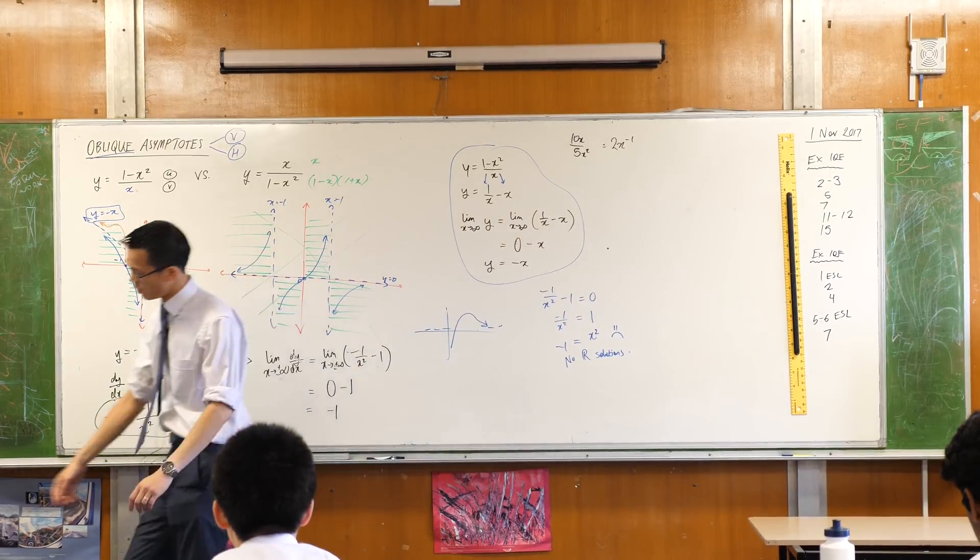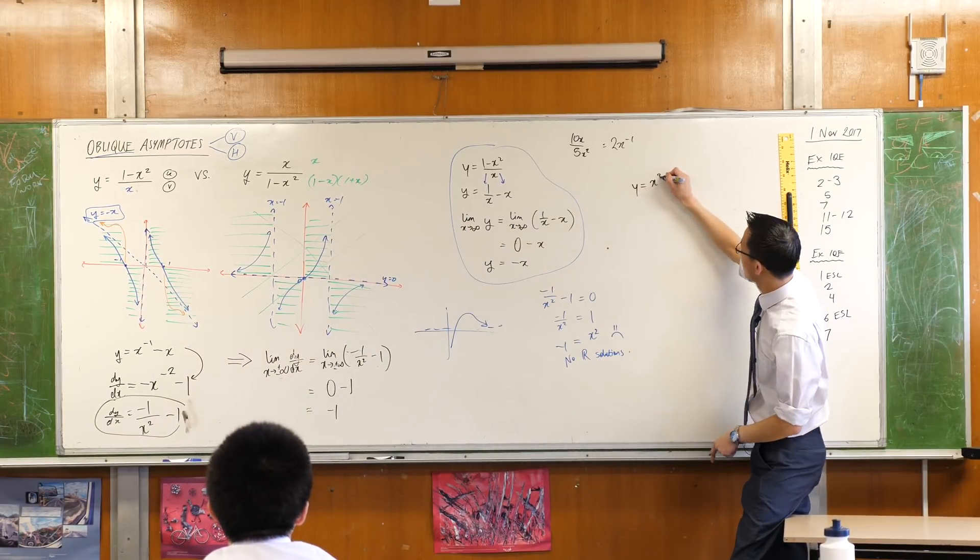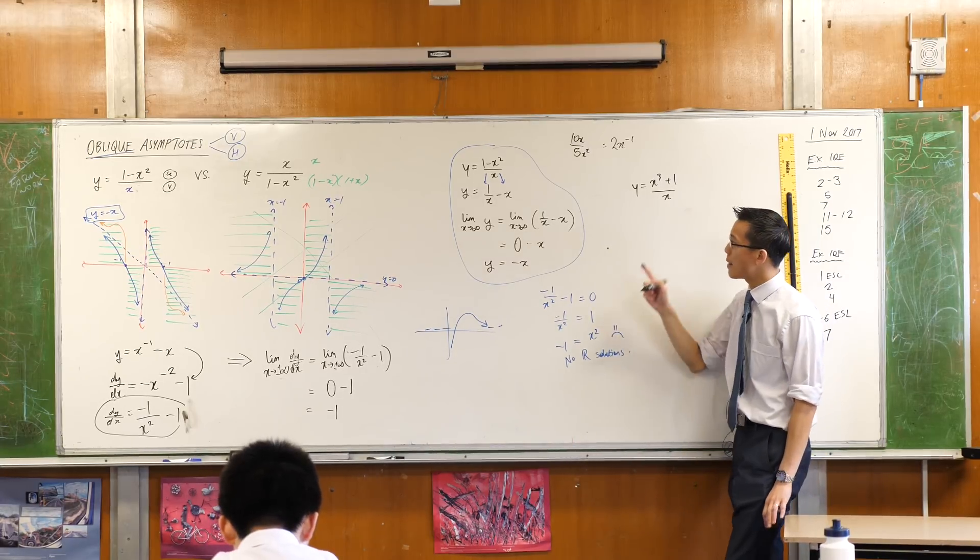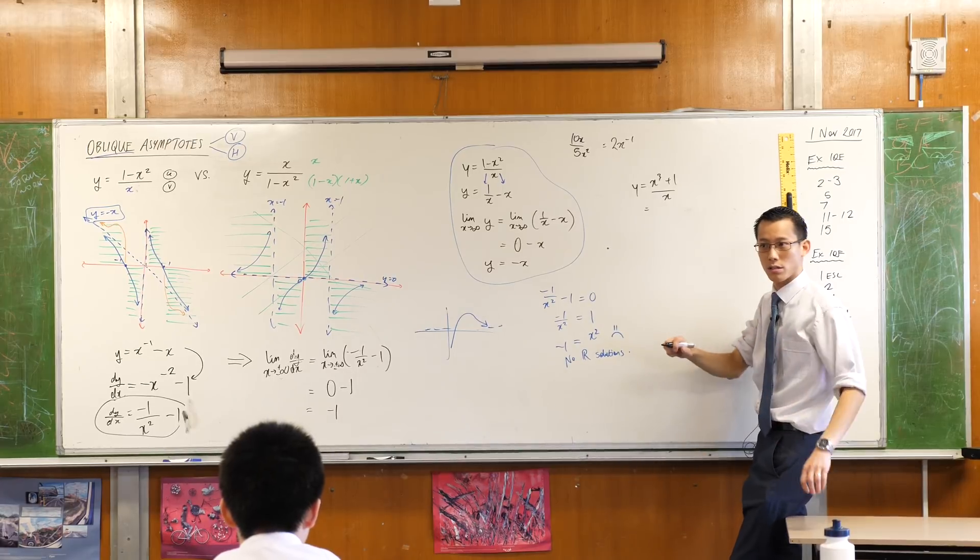Sometimes, just as a bonus, we won't do it in detail, but sometimes, just as a bonus, you don't even get an oblique asymptote. For example, if I gave you something like this, what happens when I split it apart, when I do this trick here? What am I going to get? What are the two fractions, or two things?